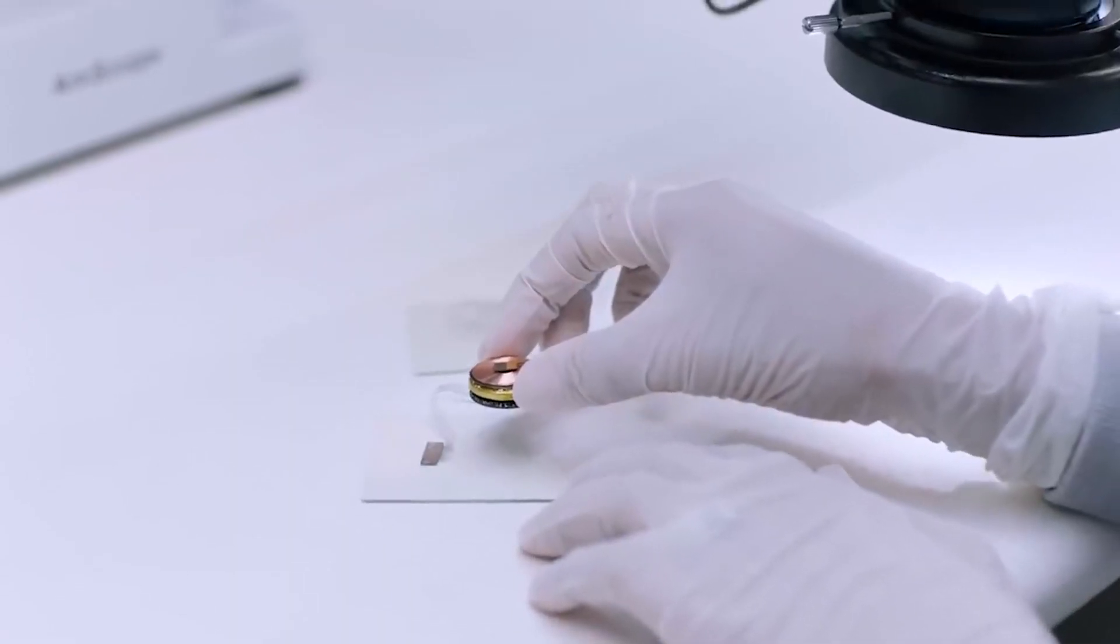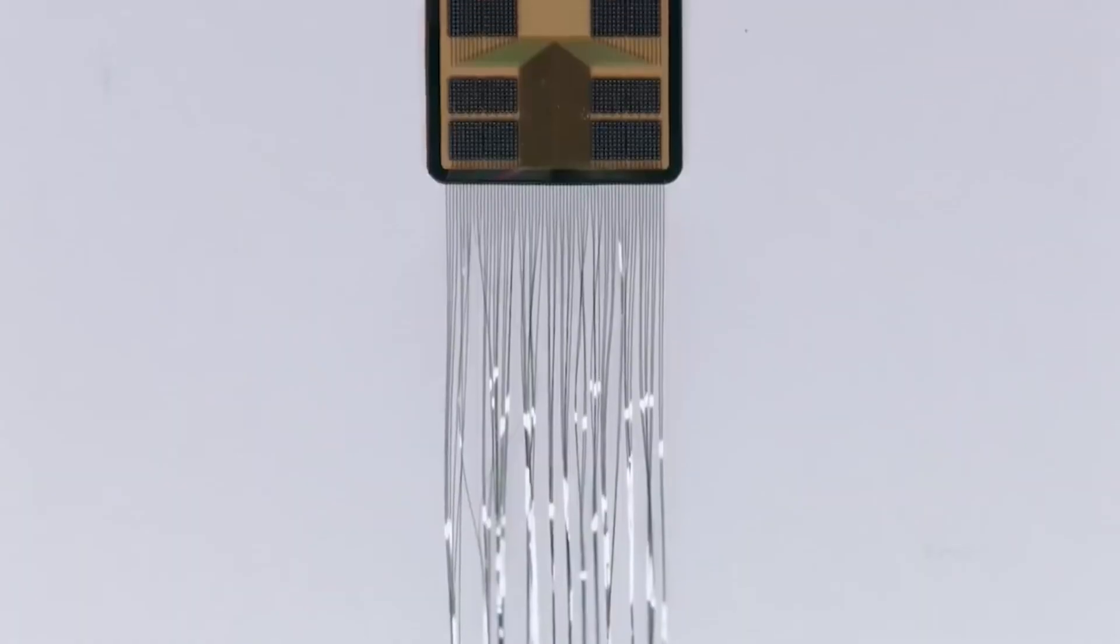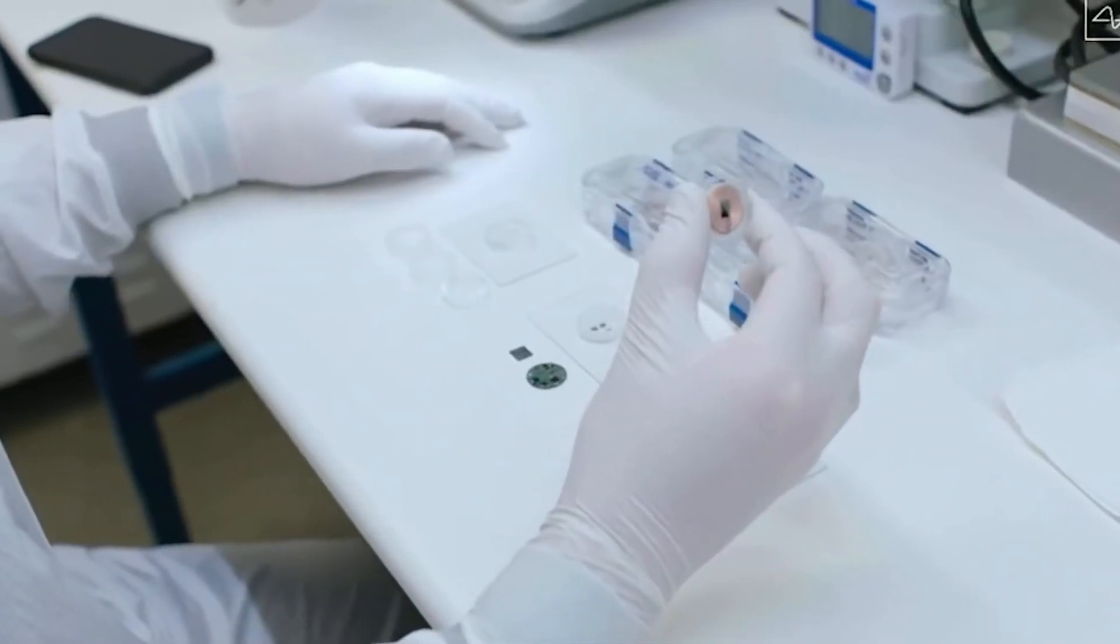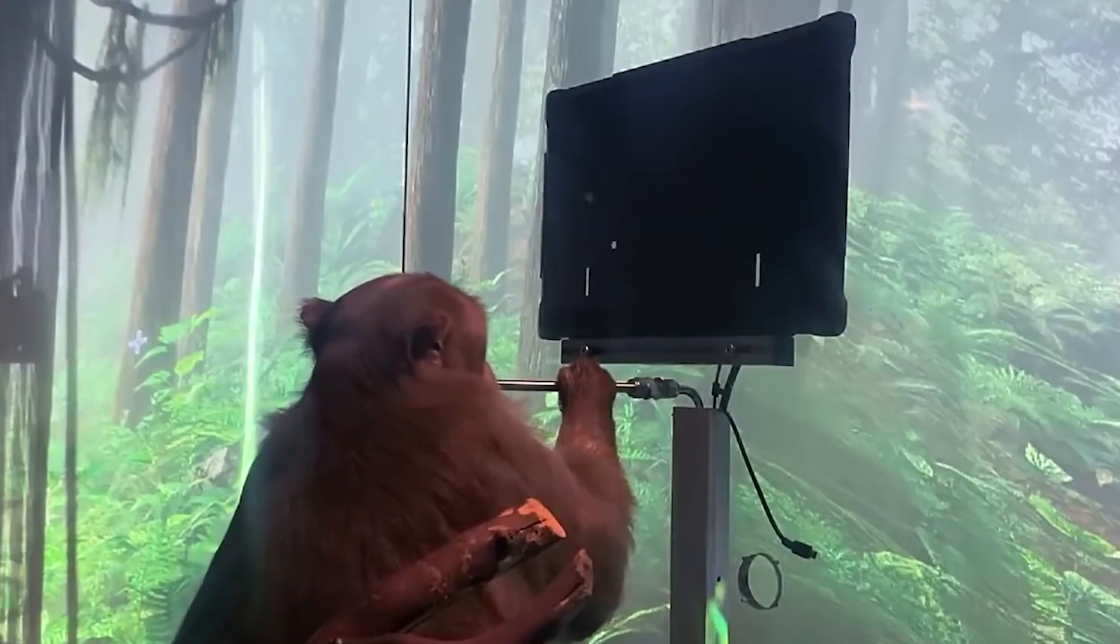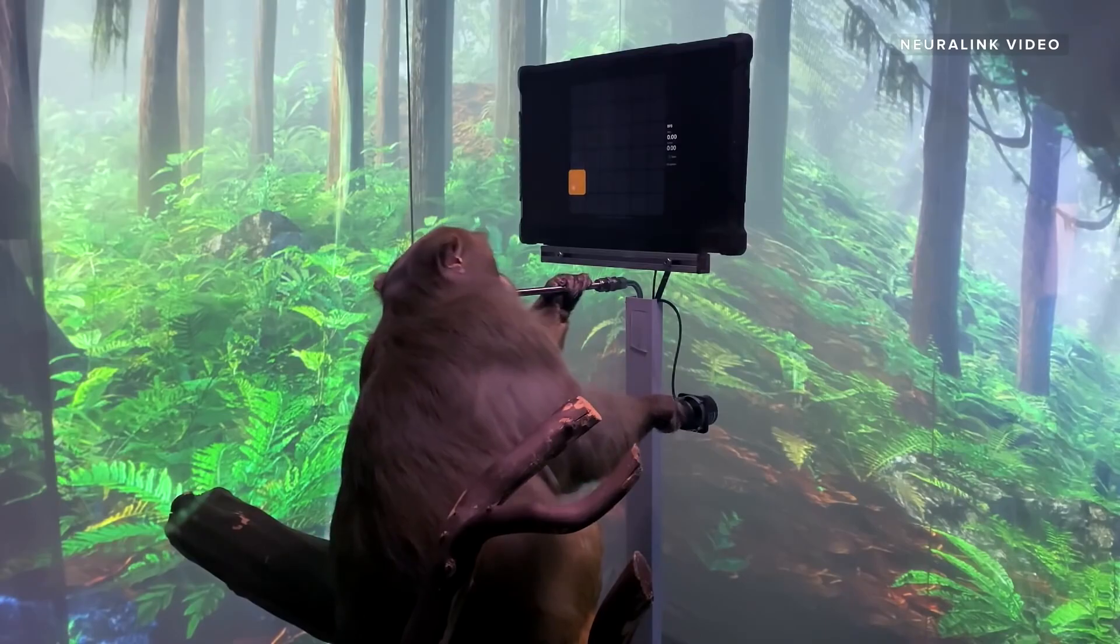The company's first product is a device that can be implanted into the brain to help people with disabilities, such as paralysis, and regain control of their limbs. The device works by recording the electrical signals produced by neurons in the brain and translating those signals into actions, such as moving a cursor or controlling a robotic arm.